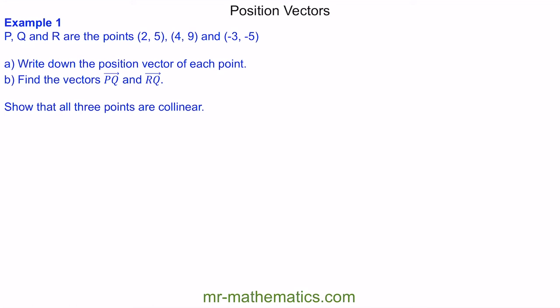In this video I'm going to show you about position vectors. A position vector shows us the point of an object from a relative position. So if we think of these coordinates: P is (2, 5), Q is (4, 9), and R is (-3, -5).